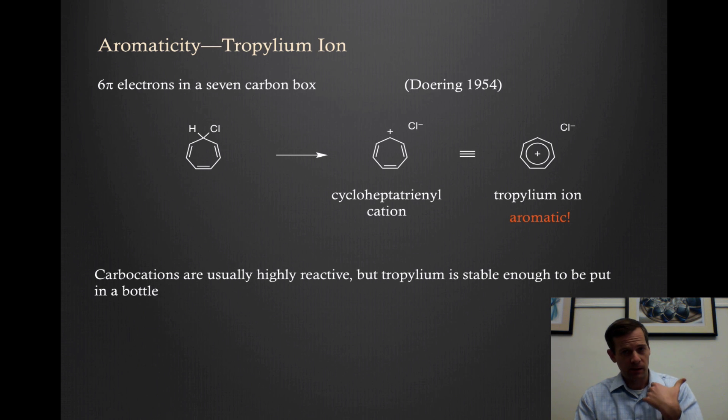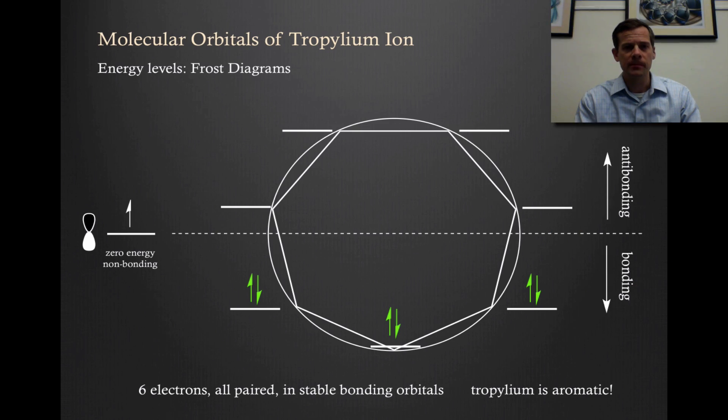Carbocations are usually highly reactive. But in this case, we have a carbocation that's part of a very stable aromatic system. And so it turns out that tropylium is actually stable enough that you can put it in a bottle. It's stable enough to be isolated and it's even commercially available. You can buy different tropylium salts from Aldrich, among other companies.